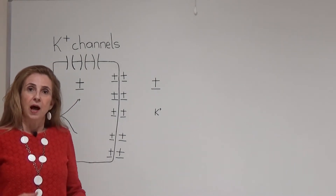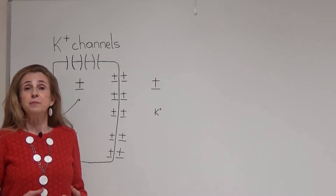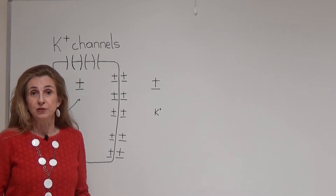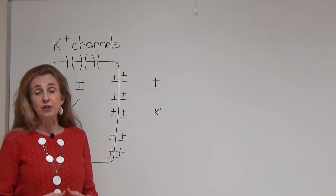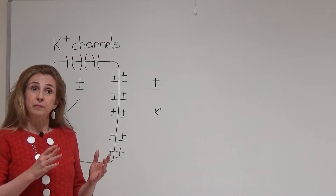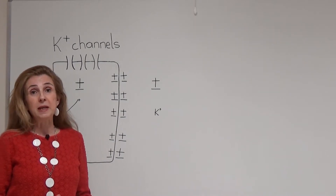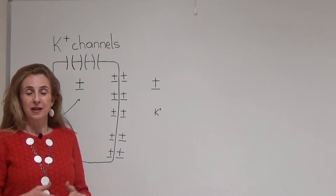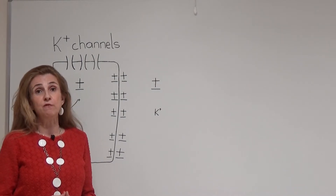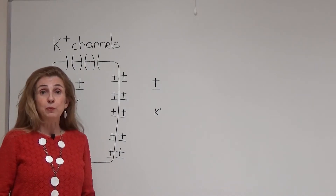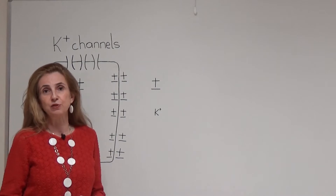We know that for ions to move through the cell membrane — in other words for an ionic current to be possible — there must be a force that pushes the ion through the ion channels. This force can be of two types: chemical and electrical. The chemical force is produced by the concentration difference of the ion in the intracellular and extracellular fluids, and the unit of it is millimolars. Nernst potential is important at that point and it helps us to convert the unit of millimolars into millivolts. Therefore, by the help of Nernst potential we are able to express the chemical force in millivolts as if it is an electrical potential difference.